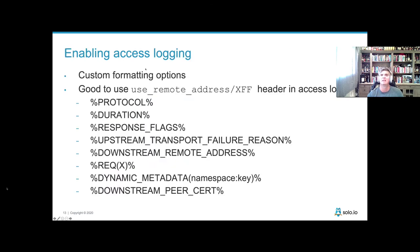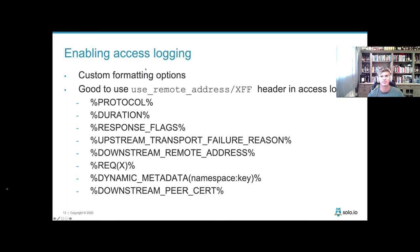Another useful feature is being able to log to standard out or to a logging file when requests are coming into the system, logging metadata about each request. This includes things like certificates, X-Forwarded-For headers, request and response details, message headers, and so on — all extremely useful for debugging and troubleshooting when things start to go wrong in an Envoy-based environment.